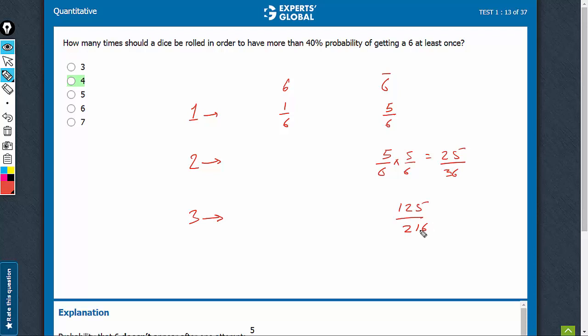So, 21 into 6 is 126. So, 216 is going to be even bigger. So, this is going to be just a bit less than 0.6.